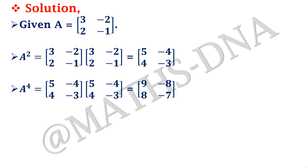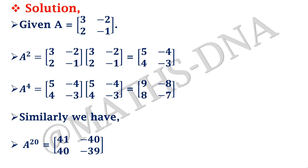Clearly observe the matrices A, A², and A⁴: the right column has negative entries and the left column has positive entries. With each power there is a difference of 2 in each entry. Following this pattern, A raised to 20 = [41, −40; 40, −39]. You can also solve using eigenvalues, trace, and determinant — both approaches give the same answer. The correct answer is option B.